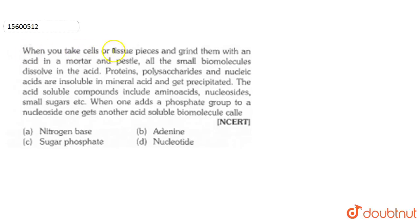When you take cells or tissue pieces and grind them with an acid in a mortar and pestle, all the small biomolecules dissolve in the acid. Proteins, polysaccharides and small sugars dissolve. When one adds a phosphate group, one gets another acid soluble biomolecule called... This question is NCERT.